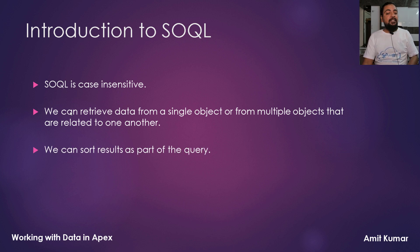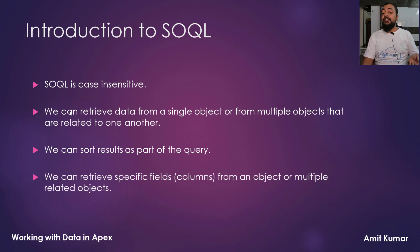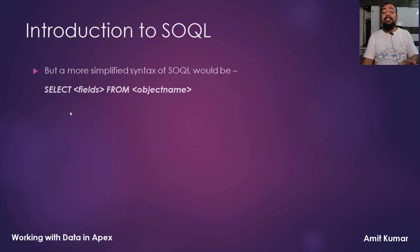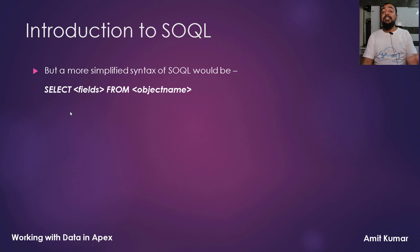We can sort results as part of the query. We can retrieve specific fields — which are nothing but columns — from an object or multiple related objects. Now if you see, this is a standard syntax of a SOQL query. Most of the parts that you can see here are optional. A simpler syntax would look something like this: we write down SELECT, which is a SOQL statement, then we mention the different fields that we want.